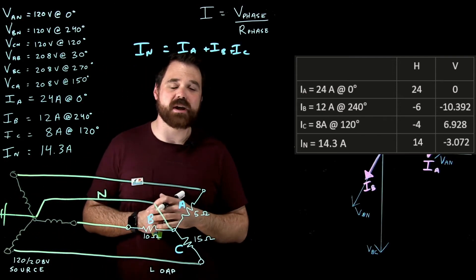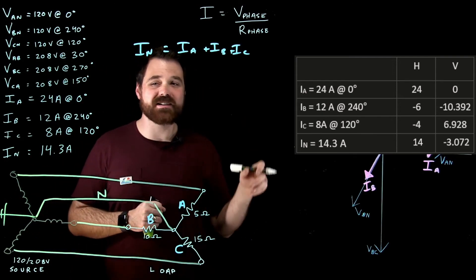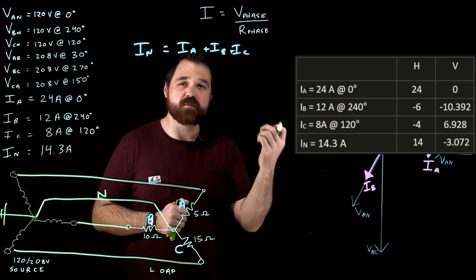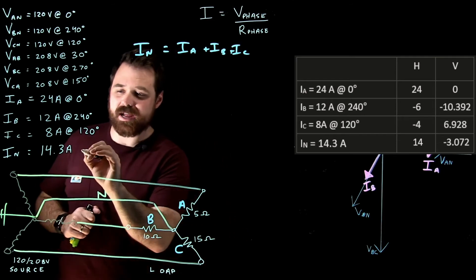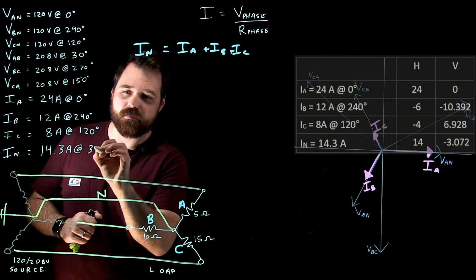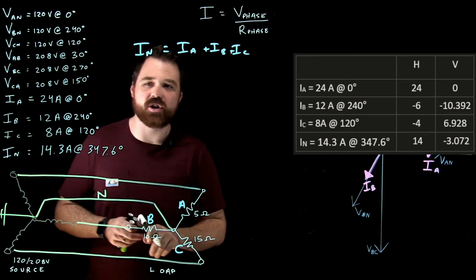And now that 14.3 amps, like I said, we go over, and then down. We end up being 12.4 amps below that zero mark, which puts us at 347.6 degrees.